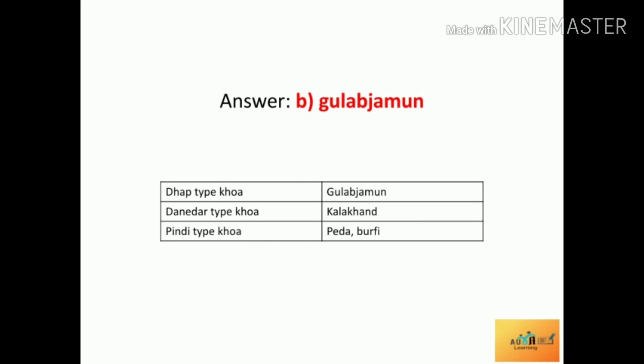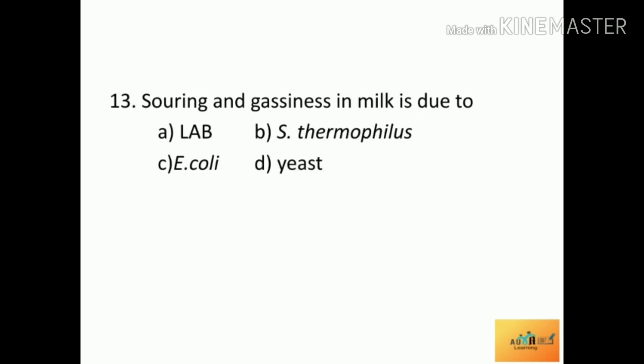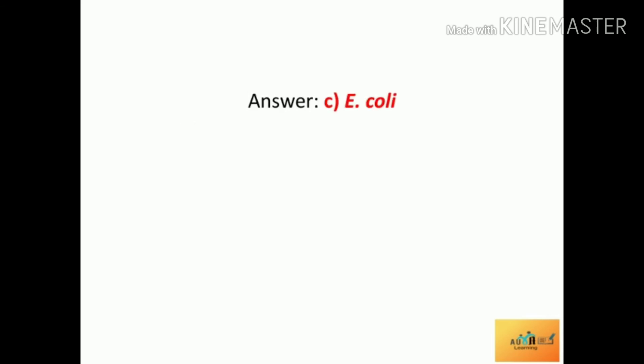Next question: Souring and gassiness in milk is due to — Option A: lactic acid bacteria, Option B: Streptococcus thermophilus, Option C: Enterobacteriaceae, Option D: E. coli. The correct answer is E. coli. E. coli causes souring and gassiness in milk.